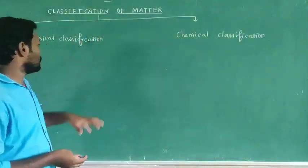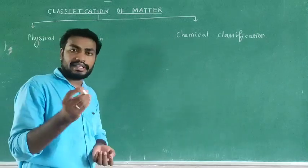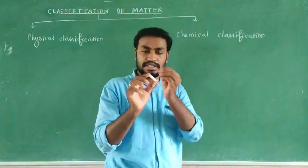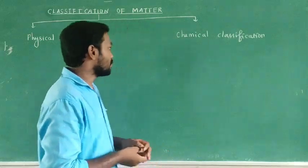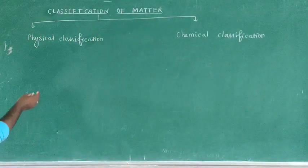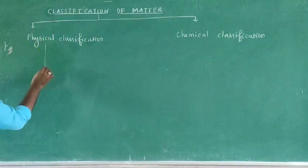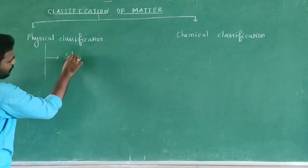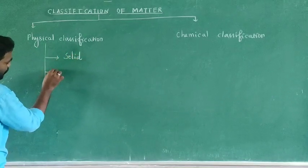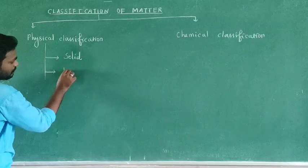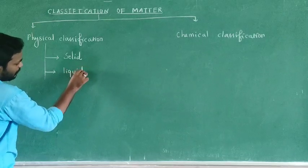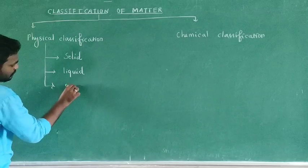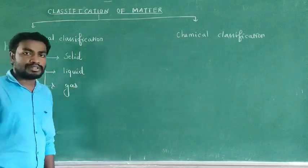For physical classification of substances, there are three types. First, in a natural chemical, it is a solid. Second, liquid. And third, gas. So the three types are solid, liquid, and gas.